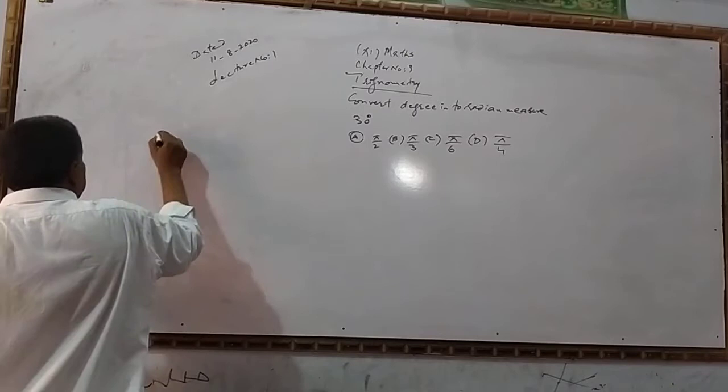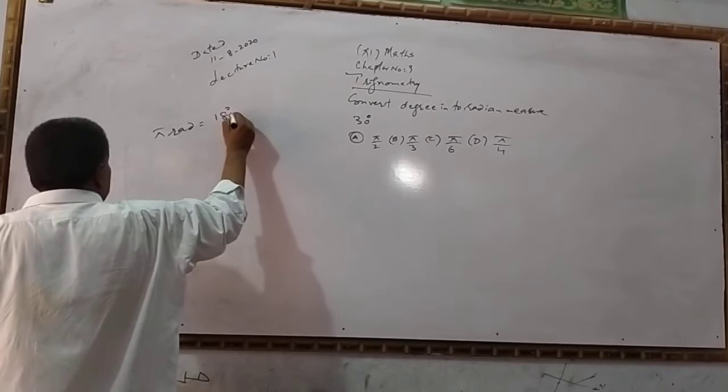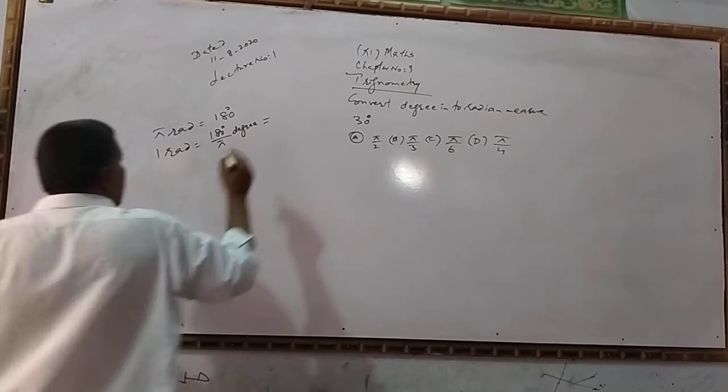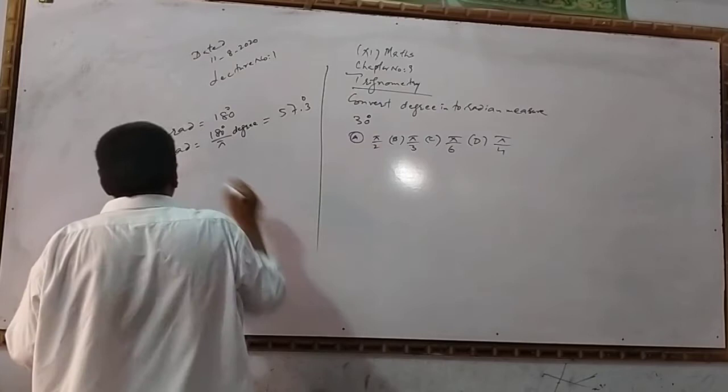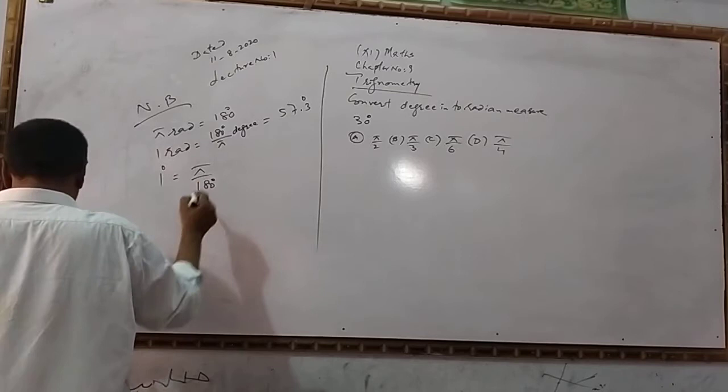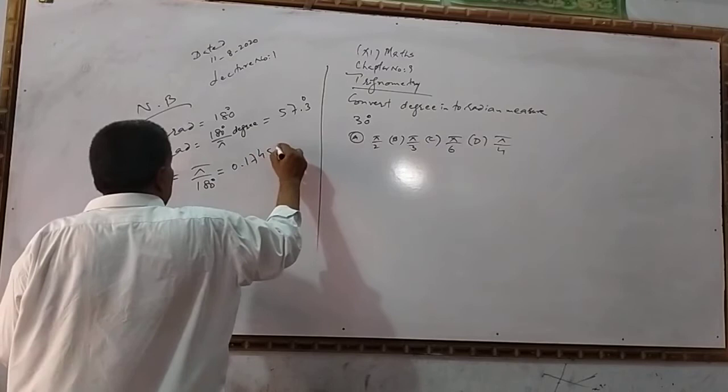π radian equals 180 degrees. One radian equals 180 degrees upon π, which equals approximately 57.3 degrees. The answer is 0.017 π radian.